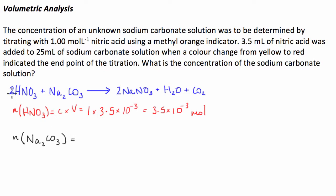is equal to one-half because there's two here and one here, so it's going to be 1/2 times the number of moles of HNO3, which is 3.5 × 10^-3 over 2, which equals 1.75 × 10^-3 moles.